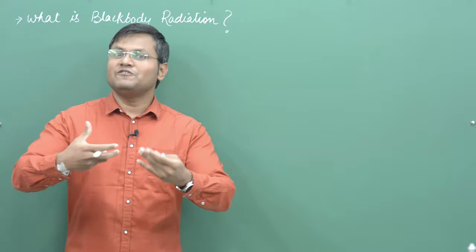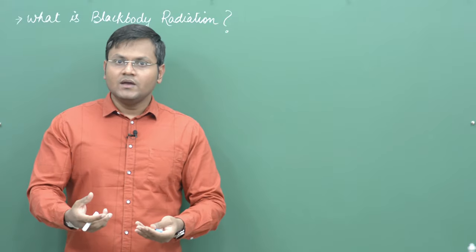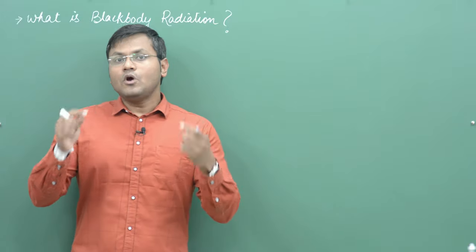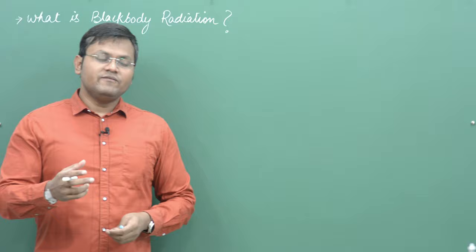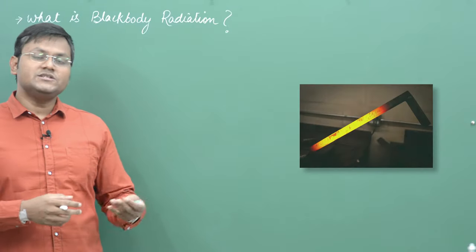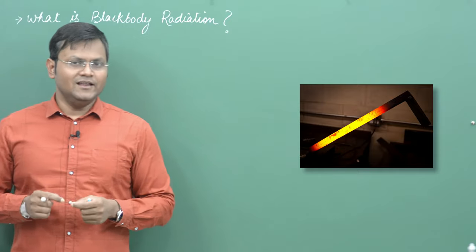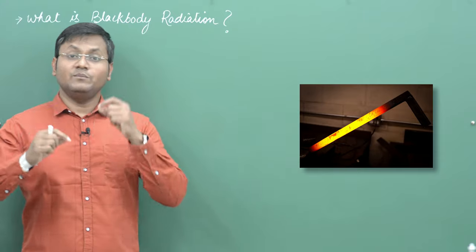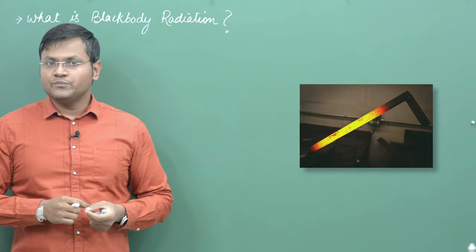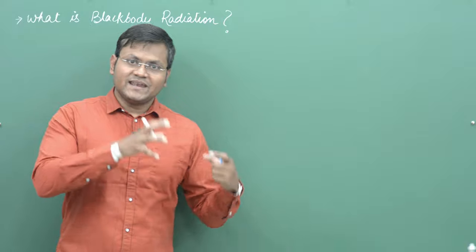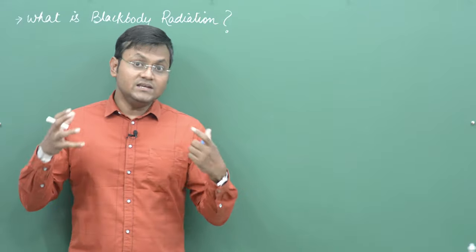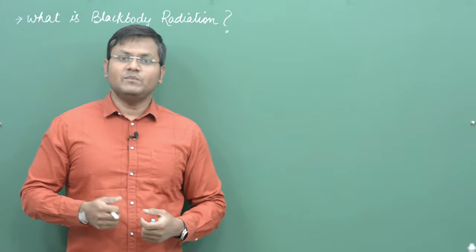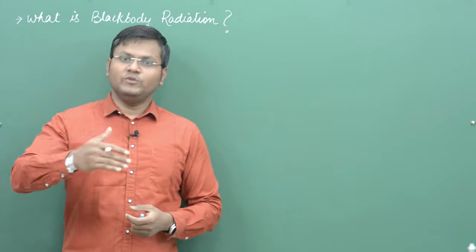Our bodies are emitting infrared radiation all the time, and not just our bodies — other objects are also emitting various kinds of electromagnetic radiation at room temperature that do not really fall in the visible spectrum. For example, if I take a piece of metal and heat it to sufficient temperature it would start glowing red; if I increase the temperature it becomes slightly orange; further still it might become yellow and then whitish or bluish. So not only do objects emit thermal radiation by virtue of their temperature, but as we increase the temperature the wavelength of emitted light also changes.